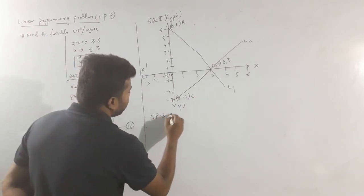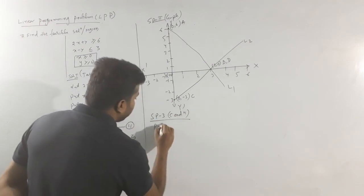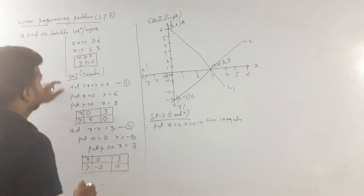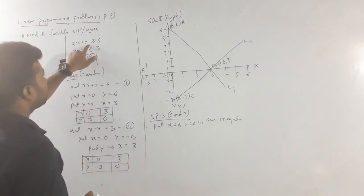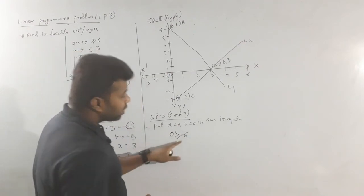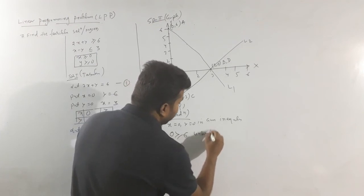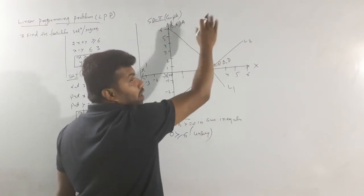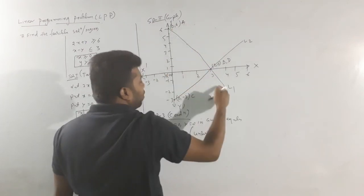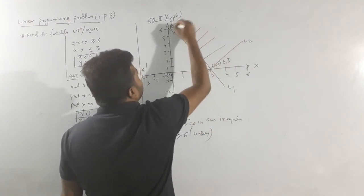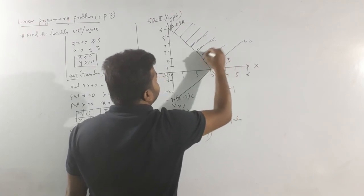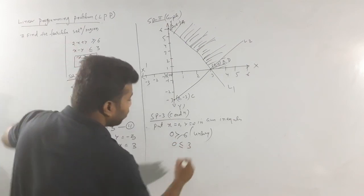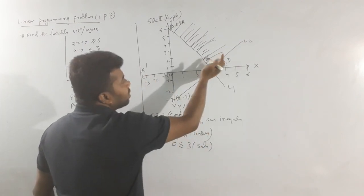For Equation 1 (x + y ≥ 1): put x = 0, y = 0 → 0 + 0 = 0 is NOT greater than or equal to 6 — this is false, meaning unsatisfied. Since it is false at the origin, the feasible region for L1 is on the opposite side of the origin. For Equation 2: put x = 0, y = 0 → 0 - 0 = 0 ≤ 3 — this is true, satisfied. Since it is true at the origin, the feasible region for L2 is towards the origin.